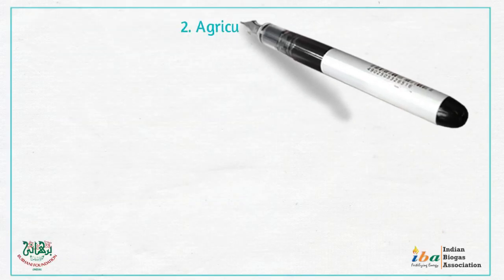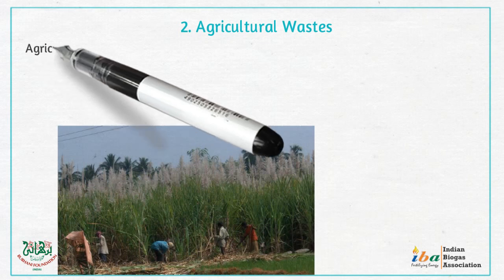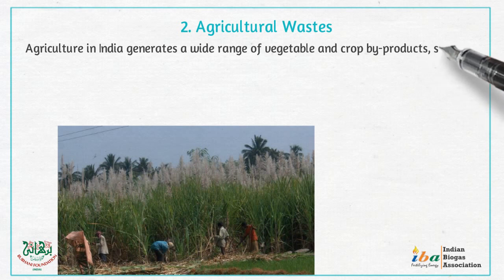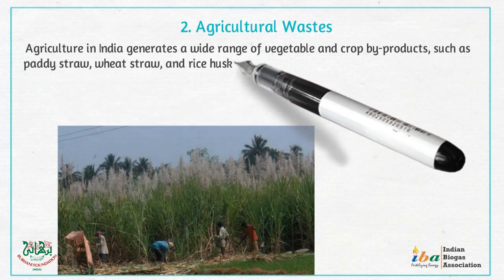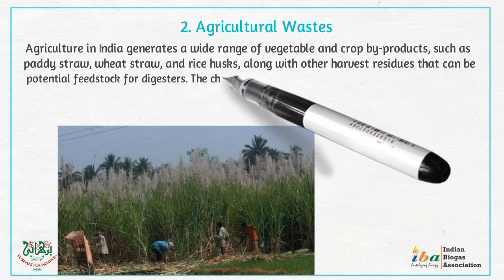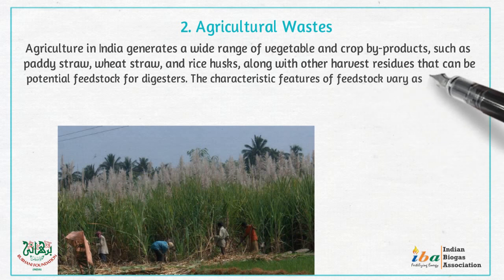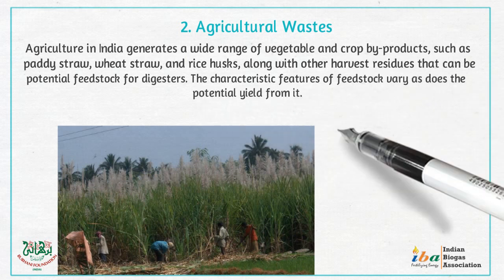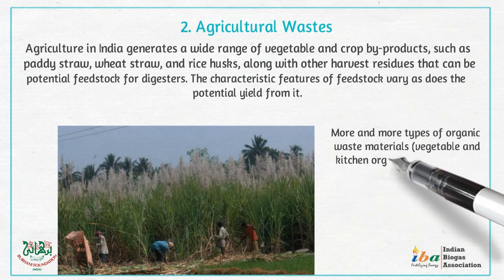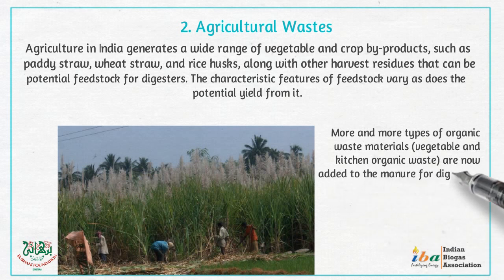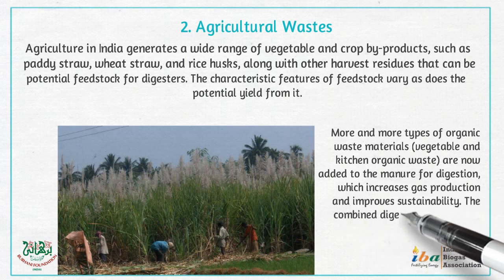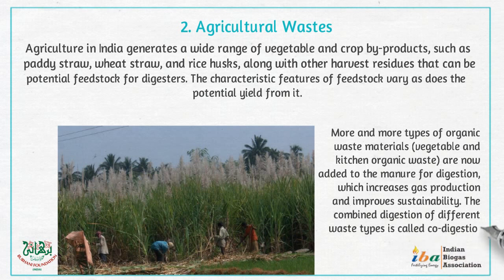2. Agricultural wastes. Agriculture in India generates a wide range of vegetable and crop by-products, such as paddy straw, wheat straw, and rice husk, along with other harvest residues that can be potential feedstock for digesters. The characteristic features of a feedstock vary, as does the potential yield from it. More and more types of organic waste materials — vegetable and kitchen organic waste — are now added to the manure for digestion, which increases gas production and improves sustainability. The combined digestion of different waste types is called co-digestion.